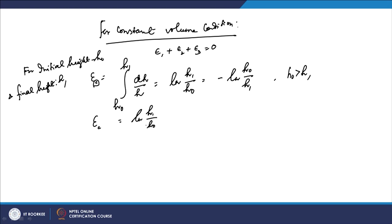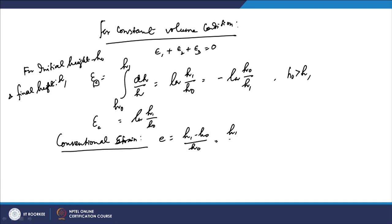Similarly, for the conventional engineering strain, it is (h₁ − h₀)/h₀, which equals h₁/h₀ − 1, giving negative values. But for the compressive engineering strain in metalworking, we write it as (h₀ − h₁)/h₀. This is the convention used when dealing with deformation in metal working analysis.